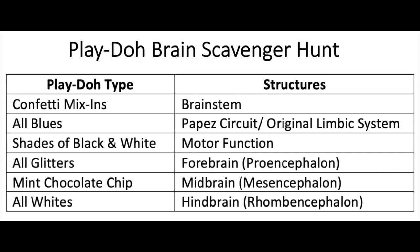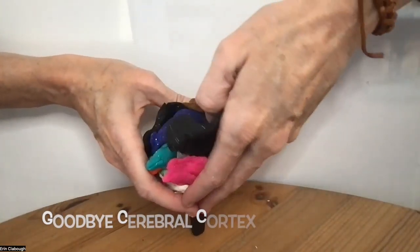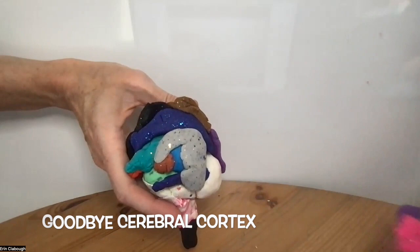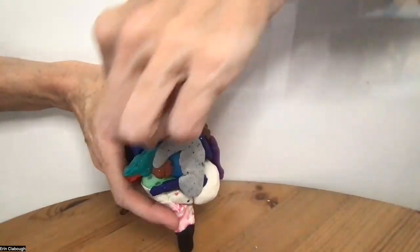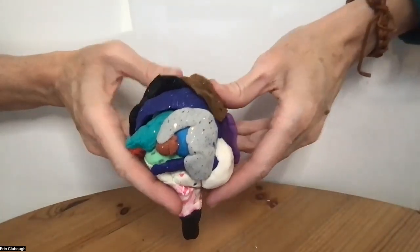Now we're going to take our brain apart, and as you go back through, I'd like you to look at these groupings. They're either grouped by functionality or by when the brain area arose during development. So first we're going to take off our cerebral cortex — all four of those, plus the fifth limbic lobe there.